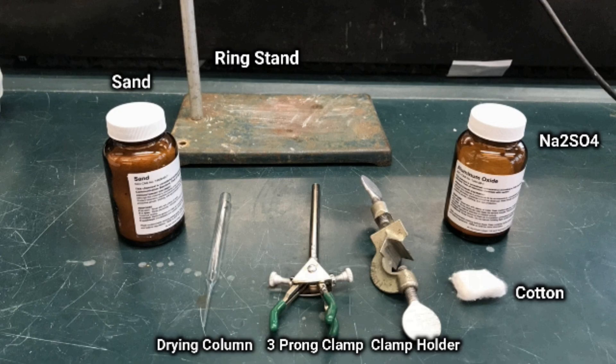In part 2, we will demonstrate how to set up a drying column. You will need sand, a pipette, sodium sulfate, cotton, and a ring stand.